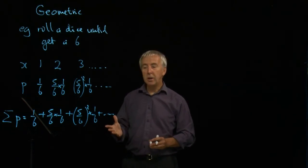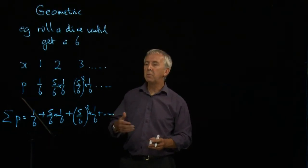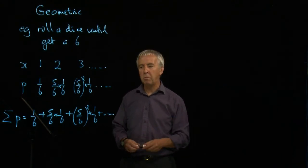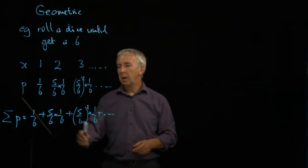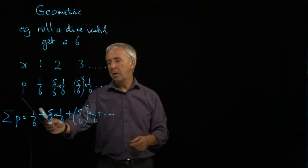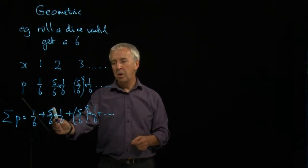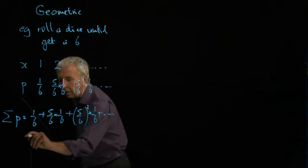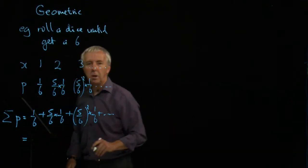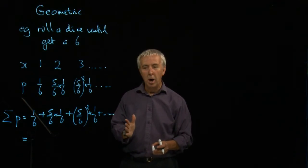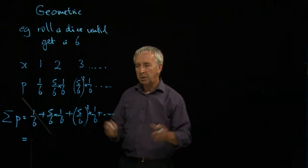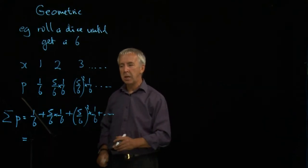This actually is a geometric series which you'll have met in your pure maths. That's why it's called a geometric distribution. Each term is the previous term multiplied by the constant ratio, five-sixths. And the formula for adding up such a geometric series where the ratio term is less than one, which means that these numbers get smaller and smaller, and the total, the infinite total does make sense.